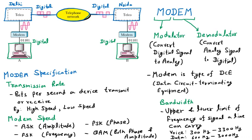The problem arises with the telephone line provided to us at home, which is called the local loop. The telephone line coming to my home and your home is analog — that is the problem. My computer generates digital data, your computer generates digital data, but the telephone line coming to our homes carries only analog signals. Because of this problem, the modem comes into the picture.